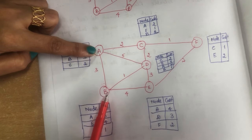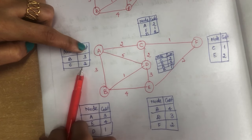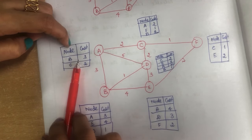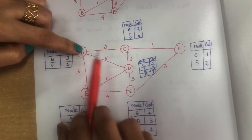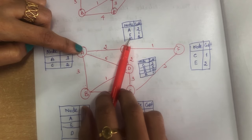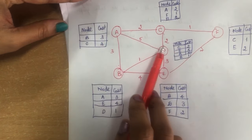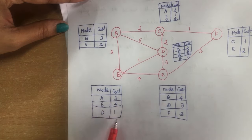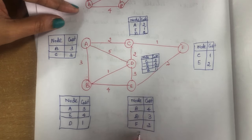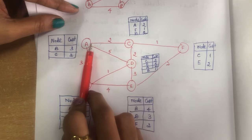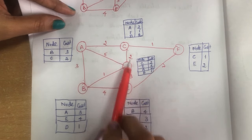For node A, it can reach B with cost 3 and C with cost 2. For node C, the link state information is: C can reach A, D, and F with costs 2, 1, and 2 respectively. For B, it can reach A, D, and E directly with the costs listed. For E, it can reach D, B, and F directly. For D, it can reach C, A, B, and E with the listed costs. For F, it can reach only C and E.